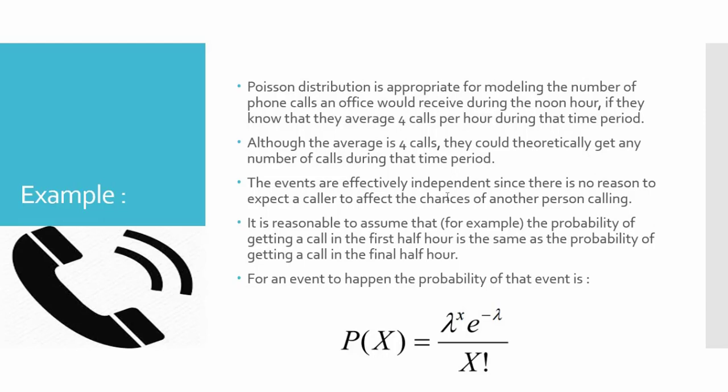The probability of the event is this formula: P(x) equals lambda to the power x, where lambda is the occurrence divided by interval, or it's mostly mu, which is the mean of the distribution, e to the power minus lambda,